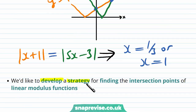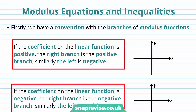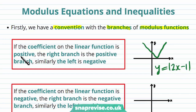We'd like to develop a strategy for finding the intersection points of linear modulus functions. Firstly we have a convention with the branches of modulus functions. Let's say we had the graph of the modulus of 2x minus 1. If the coefficient on the linear function is positive, then the right branch is called the positive branch, and similarly the left is negative. So here we're dealing with the modulus of 2x minus 1 — because the coefficient of the x term is positive, i.e. 2, we call the right branch the positive branch and the left branch the negative branch.